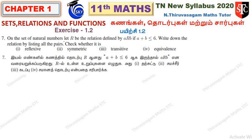On the set of natural numbers, let R be the relation defined by a R b if a plus b less than or equal to 6. Write down the relation by listing all pairs. Check whether the relation is reflexive, symmetric, transitive, and equivalence.